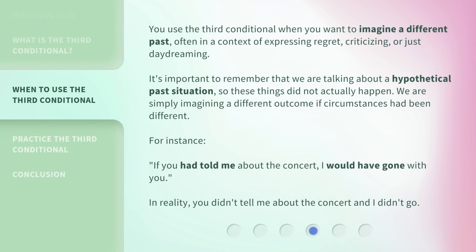You use the third conditional when you want to imagine a different past, often in a context of expressing regret, criticizing, or just daydreaming. It's important to remember that we are talking about a hypothetical past situation, so these things did not actually happen. We are simply imagining a different outcome if circumstances had been different.